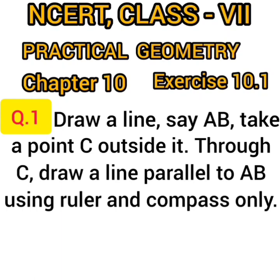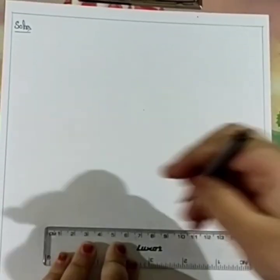Through C, draw a line parallel to AB using ruler and compass only. Now, through C, we have to draw a line which is parallel to AB. And we have to draw this figure using ruler and compass. So let's start to do this. First, we will draw a line.